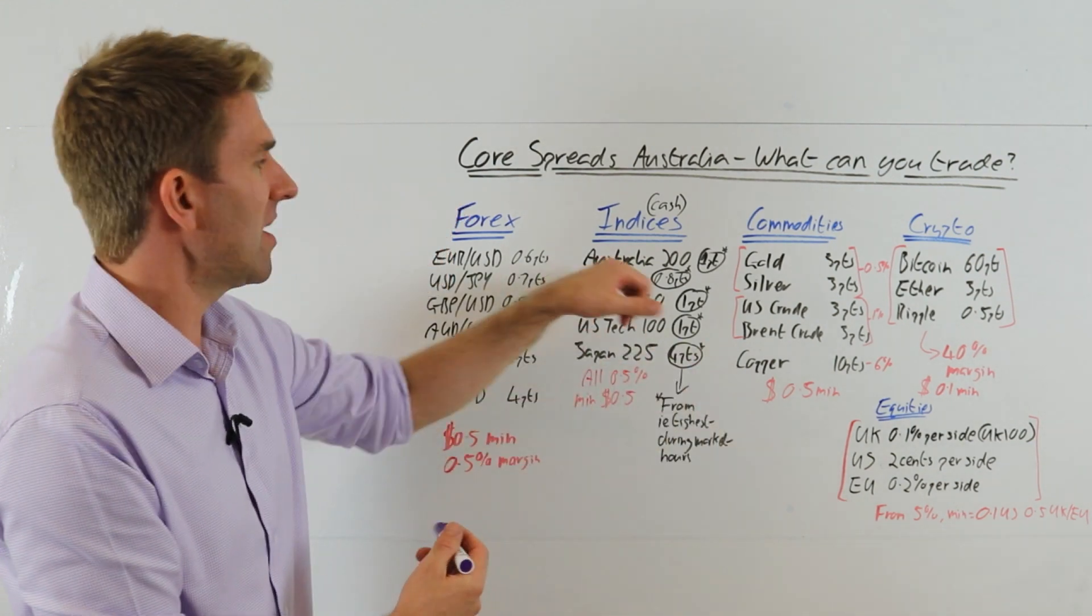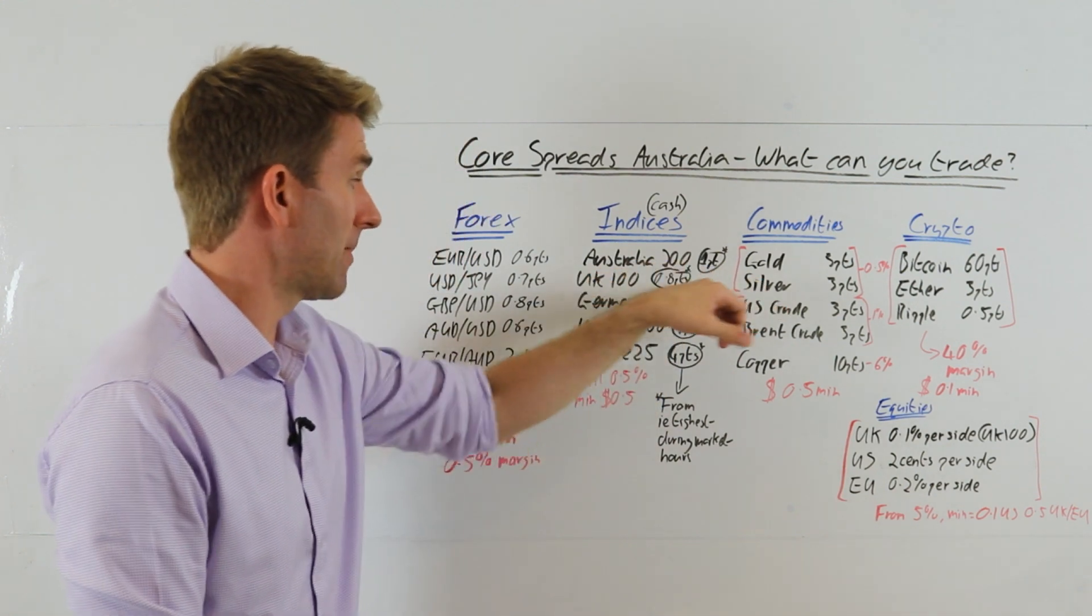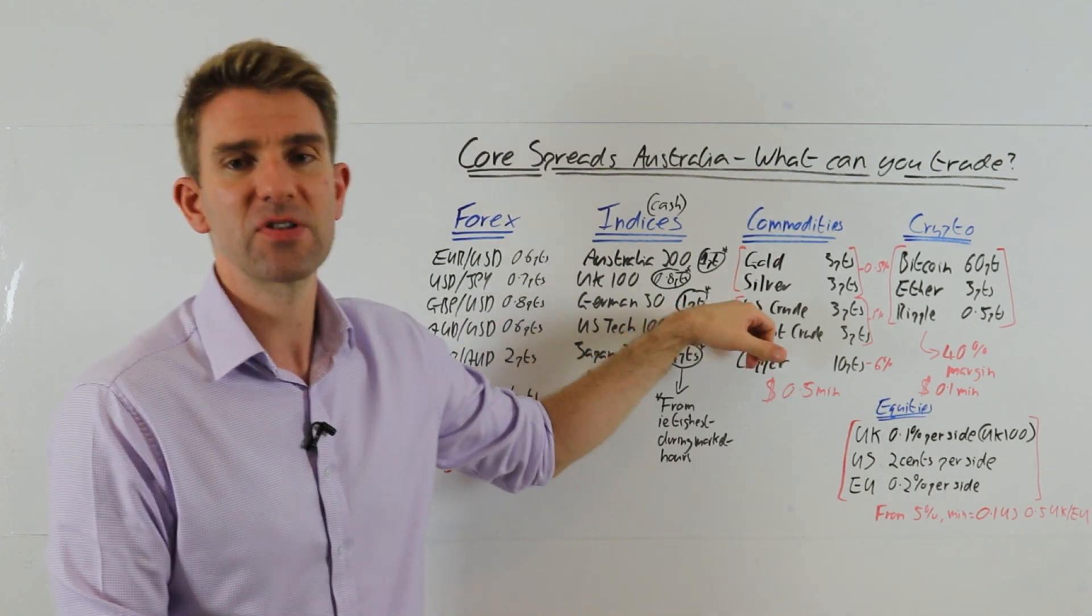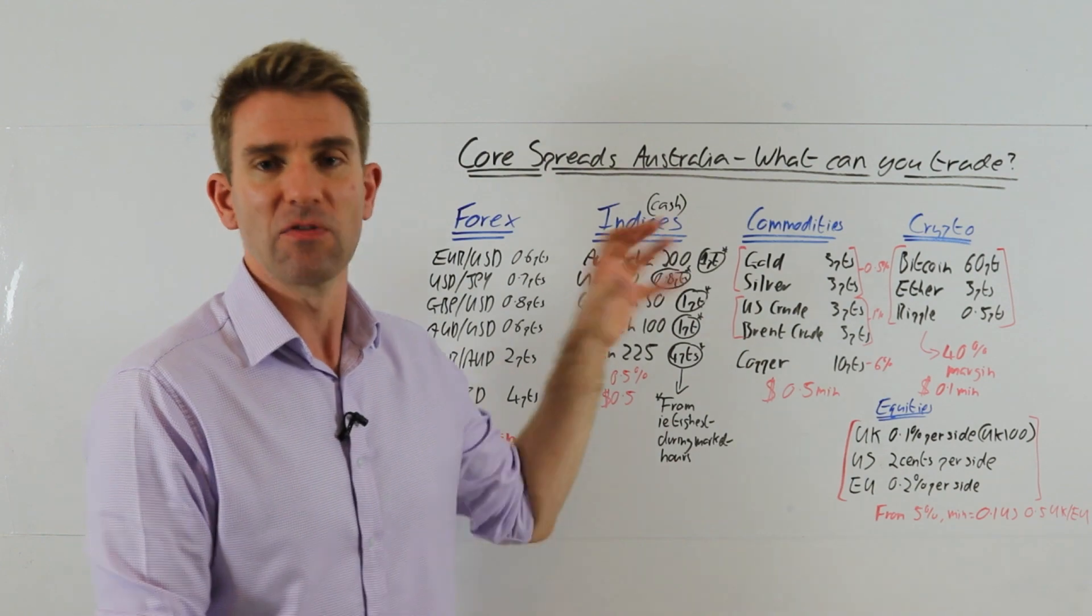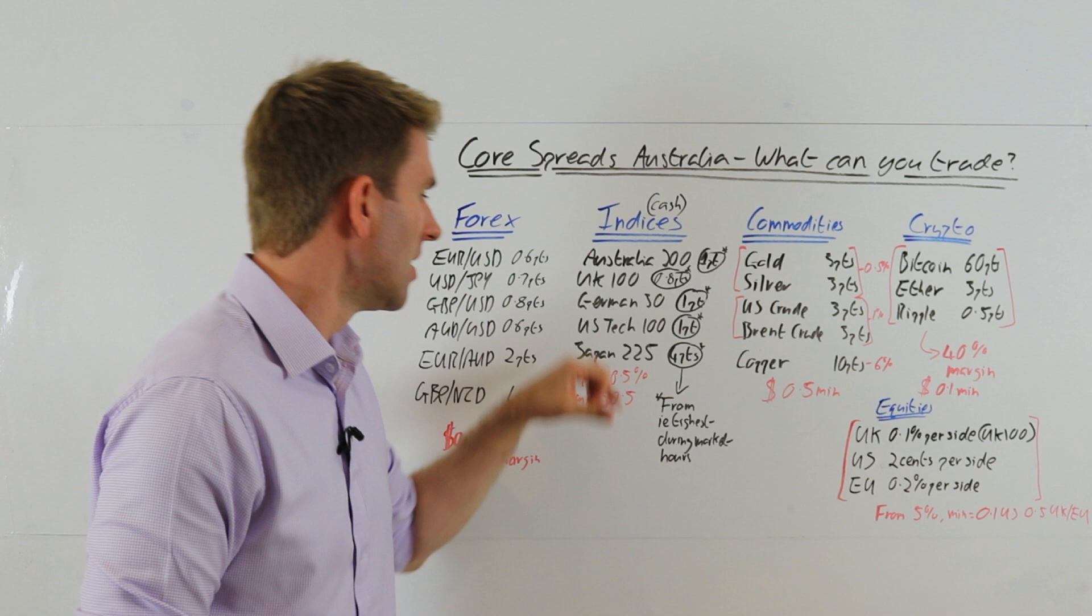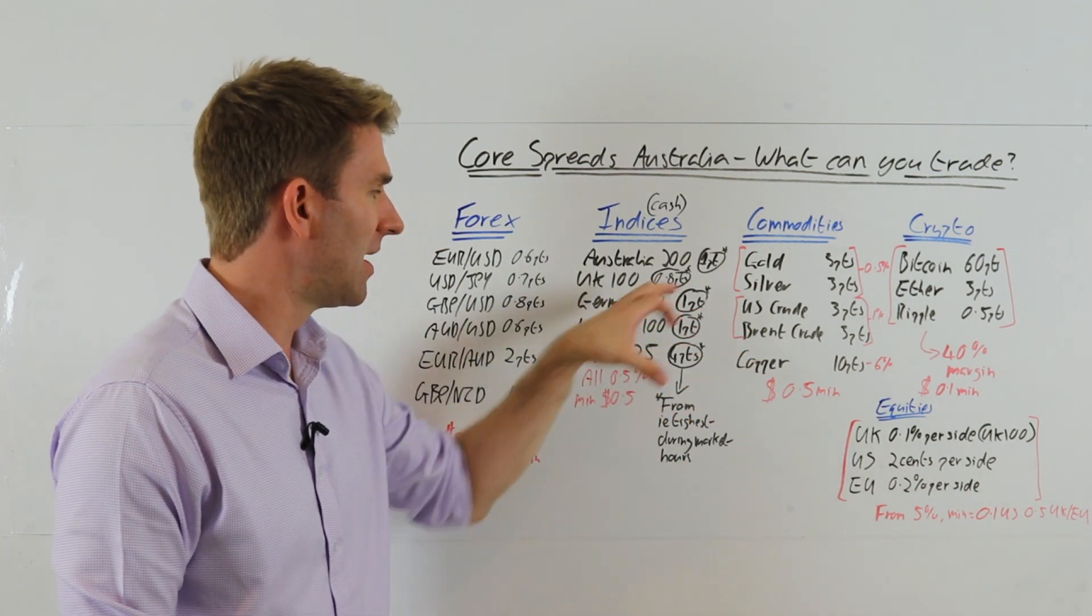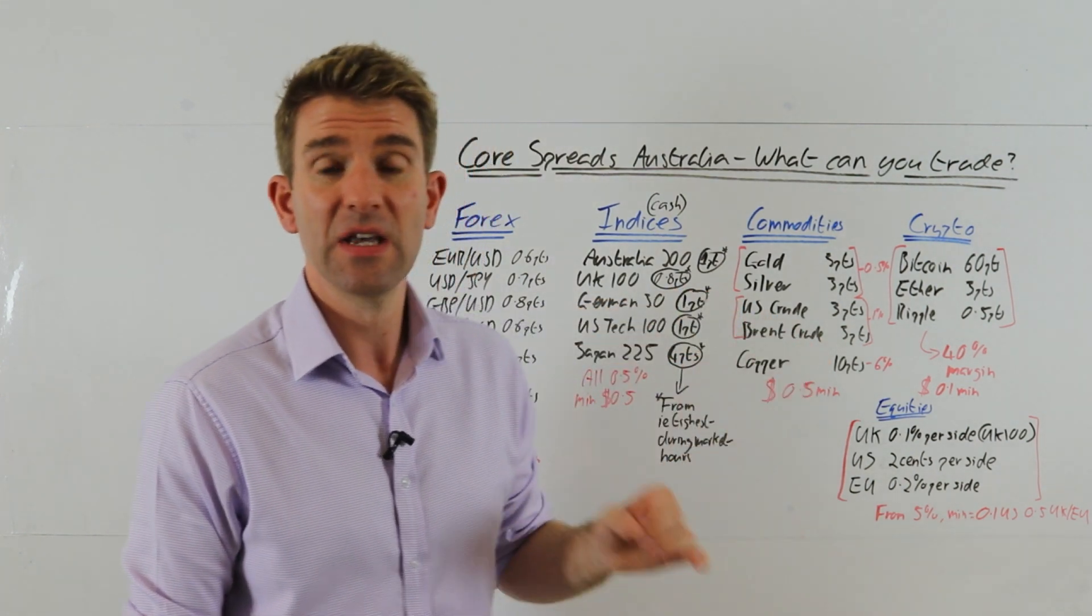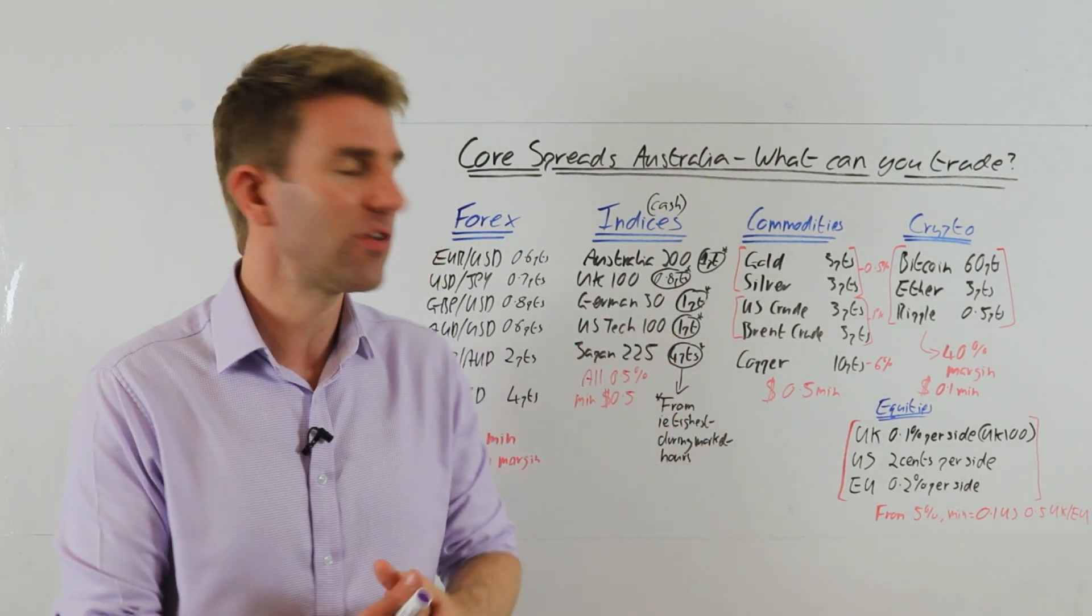Australia 200: 1 point spread. UK 100: 0.8 point spread, nice and tight. DAX: 1 point spread. That's great, you know, considering how volatile the DAX is - well, I say the DAX, it's the German 30, which is based on the DAX that you may be familiar with if you see it in the news. US Tech 100: 1 point spread. Japan 225: 4 point spread, that's a big boy.